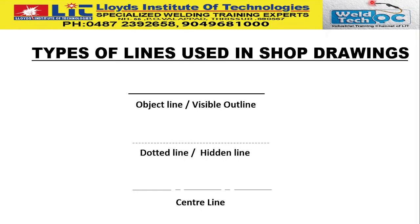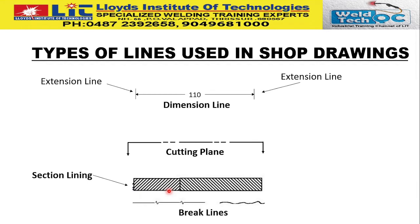Now let us discuss the types of lines used in shop drawings. The first is the object line or visible line. The next is the dashed line or hidden line, and the third is the center line. Then we have the dimension line, extension line, and dimension figure, as well as the cutting plane line used to show the sectional view. And there are also sectional lining and break lines — shorter break lines and longer break lines.